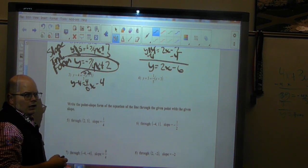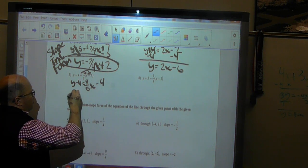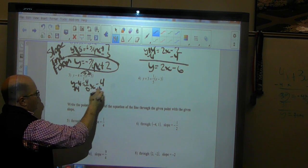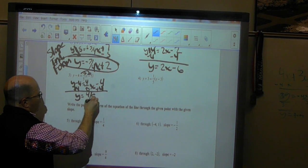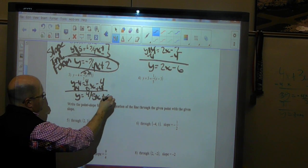I distributed it, so now I just isolate. So I'm going to go plus 4, plus 4, and I'm left with y is equal to 4 over 5x plus 0.